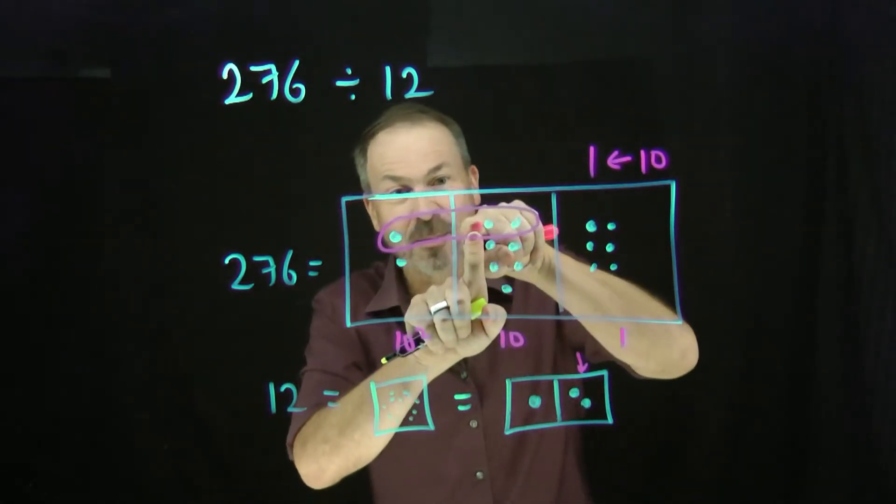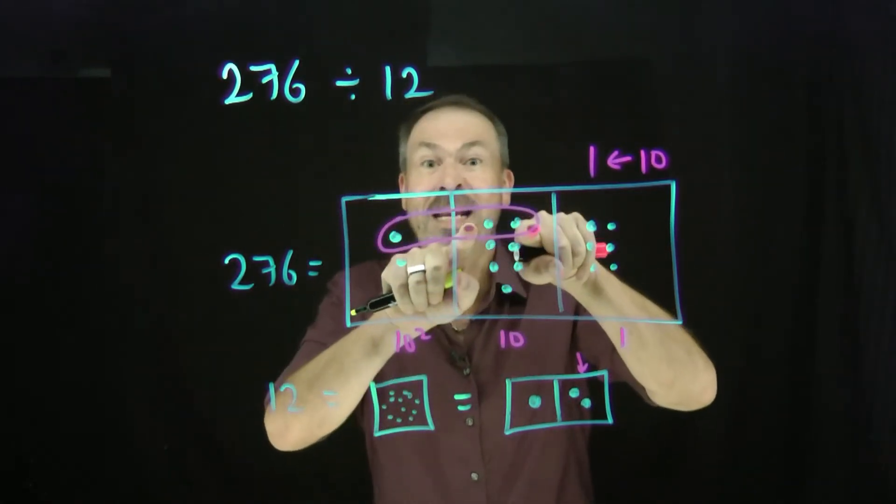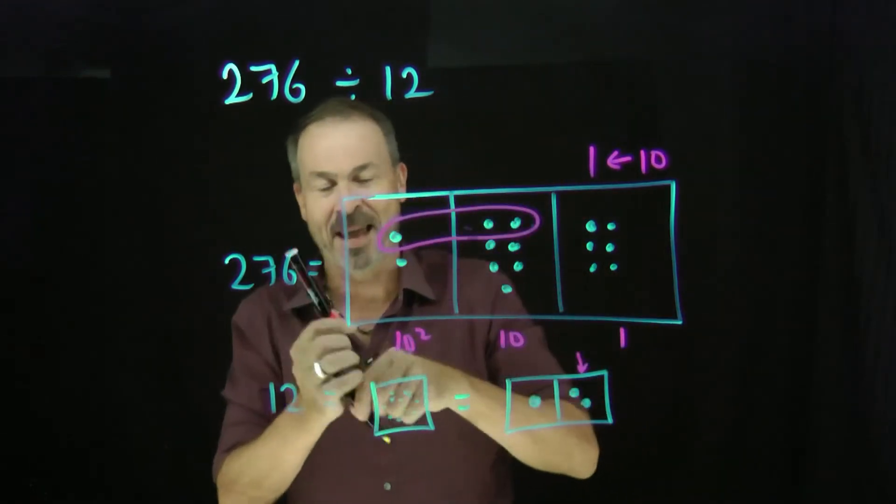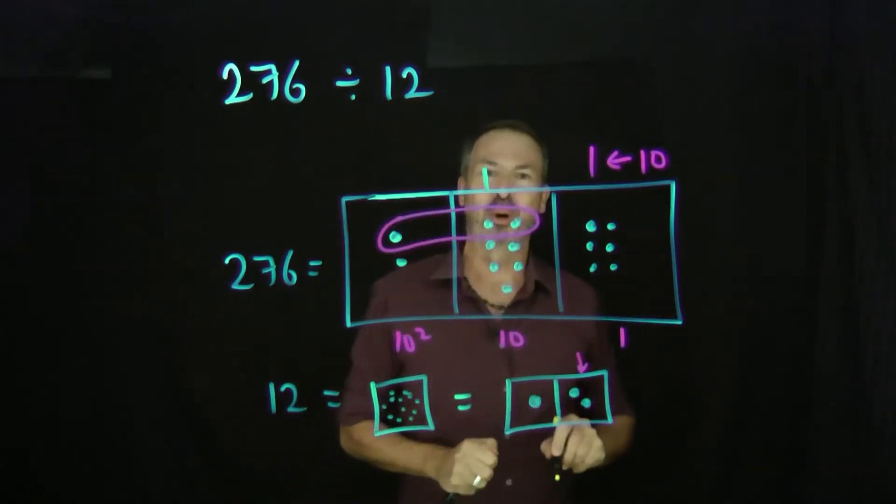If you think about it, if I unexplode that dot, it'd be one, two, three, four, five, six, seven, eight, nine, ten, eleven, twelve, it really would be 10 dots right at that level. So there's one group of 12 right at that level.